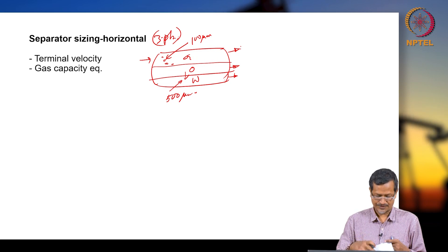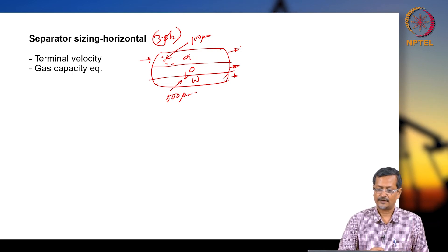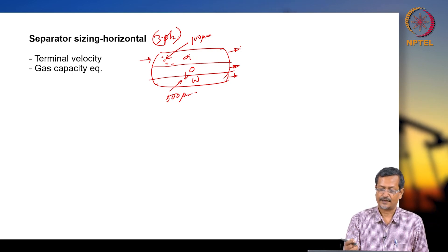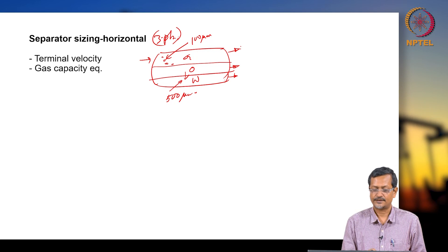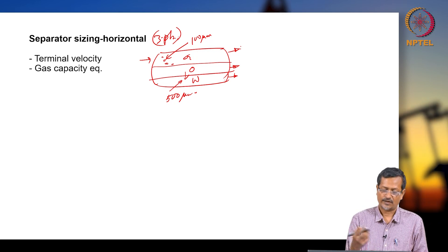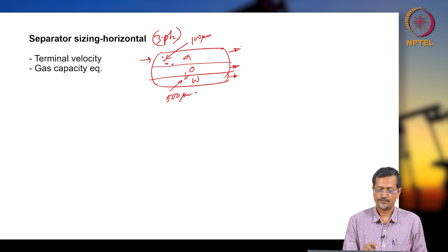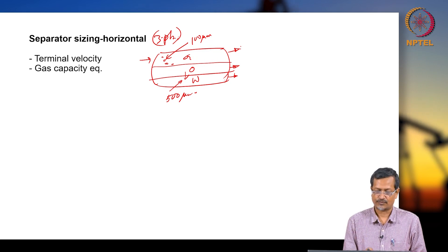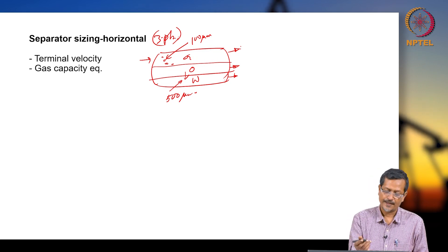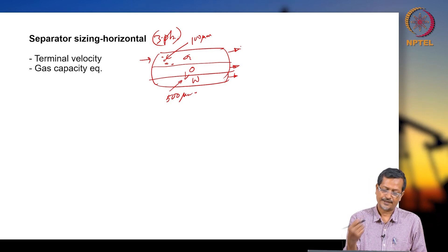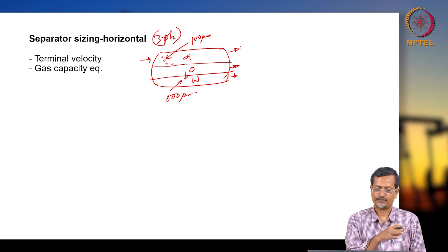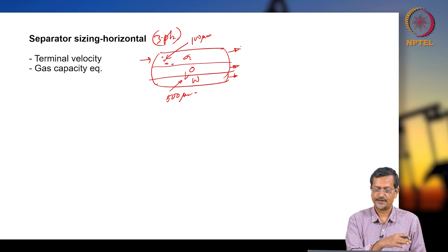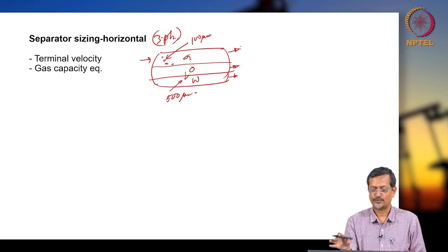Terminal velocity: when an oil particle — or water particle, since we assume a higher amount of oil — is falling through gas, the gas capacity equation calculated for a two-phase separator applies here as well.